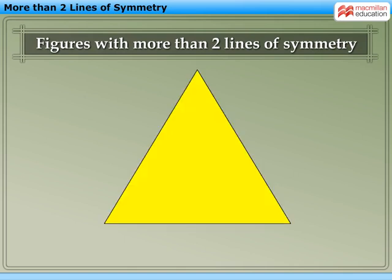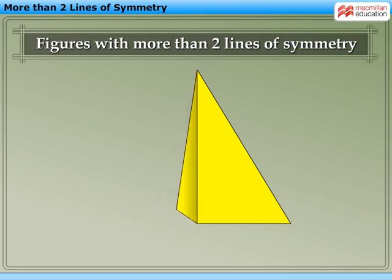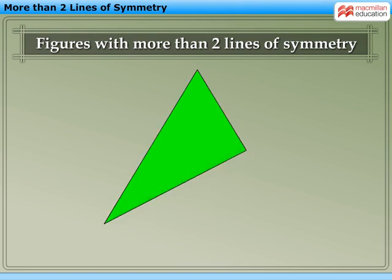For this, consider a triangular sheet having all three sides equal. Fold it into half along one vertex such that the two halves exactly coincide with each other. Repeat the same process for the other two vertices also.